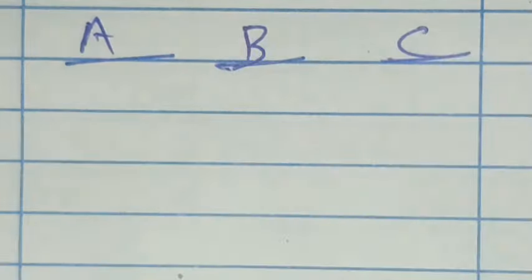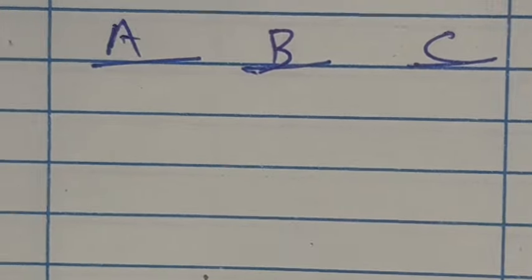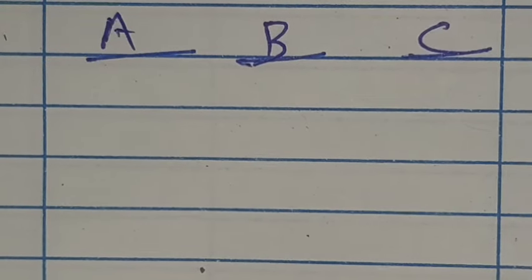Now we have a single board: A board, B board, C board. Each board is the best number we've told.